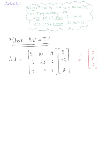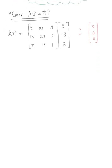So let's make sure we give ourselves plenty of room here. We are applying the row column rule. So by the row column rule, matrix A times vector u, we have the first row times that column vector u. So I have 5, 21, 19, multiplied by 5, negative 3, 2.